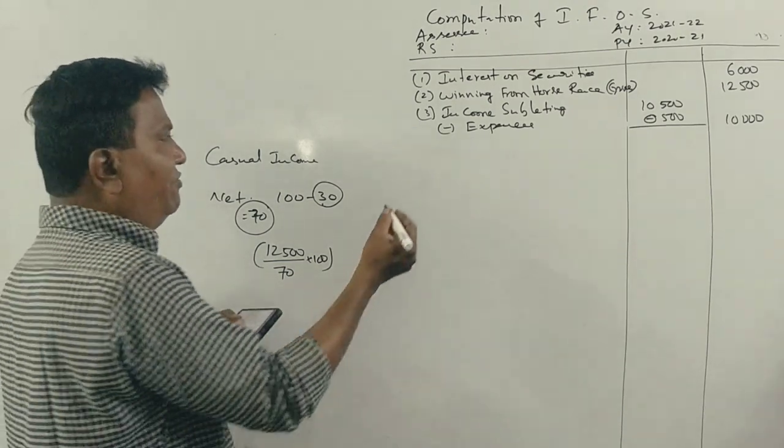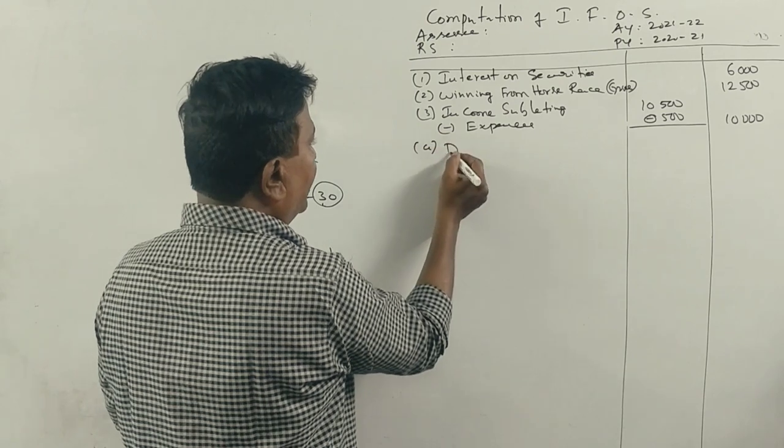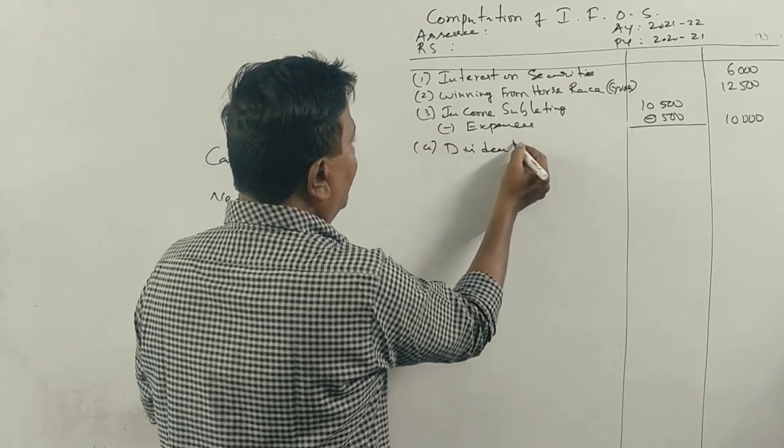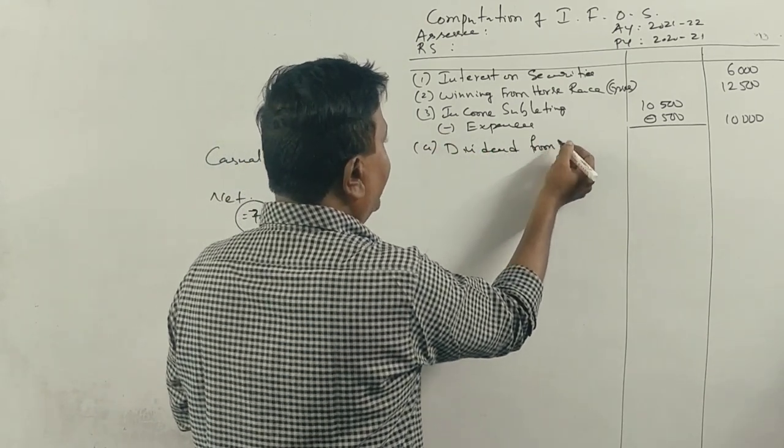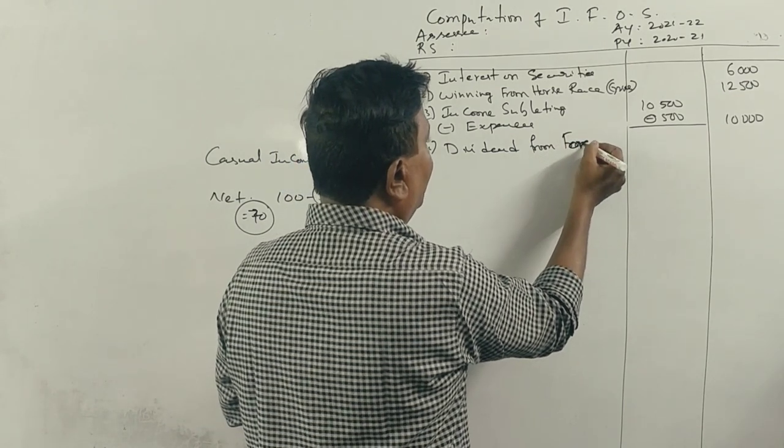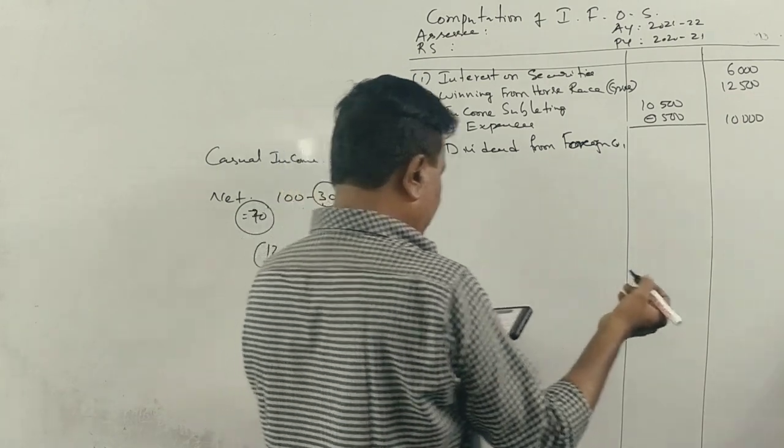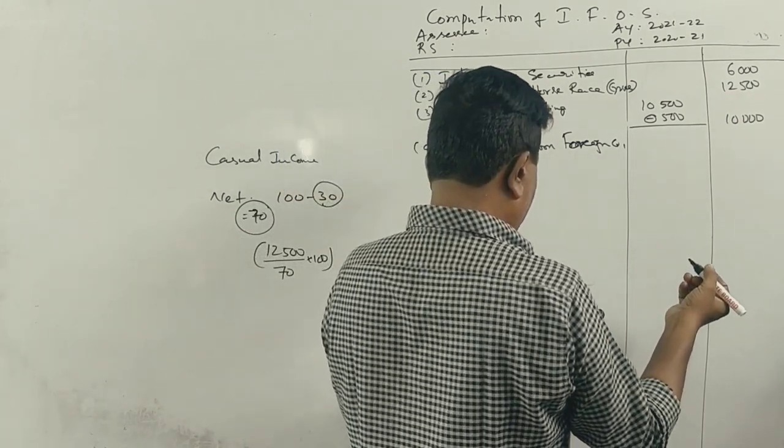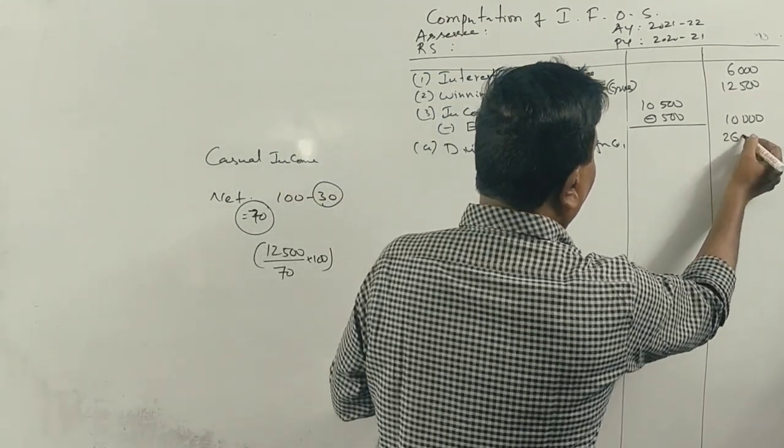Next point, dividend from foreign company. Dividend from foreign company, fully taxable. 26,000.